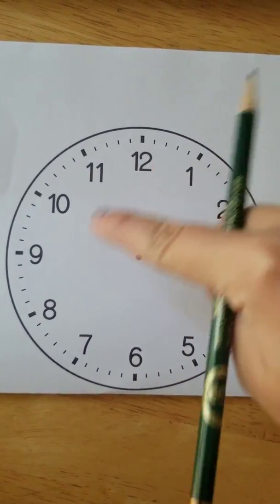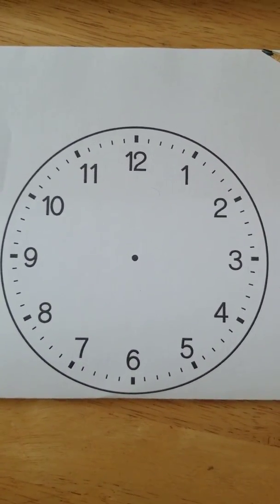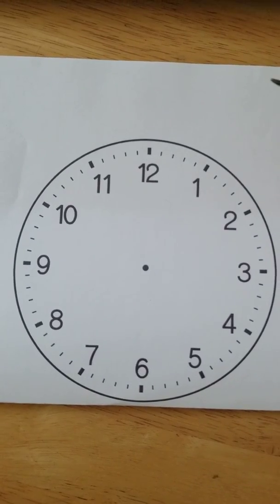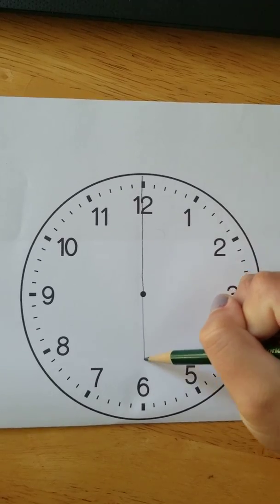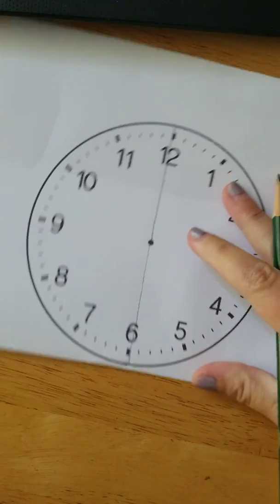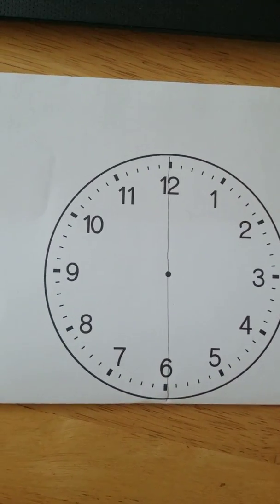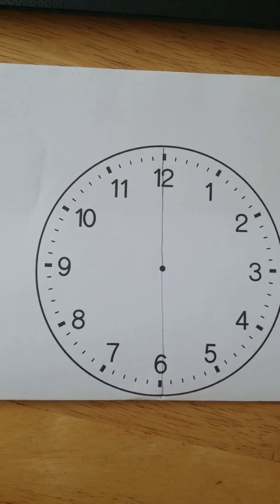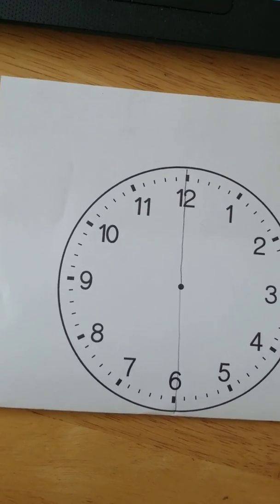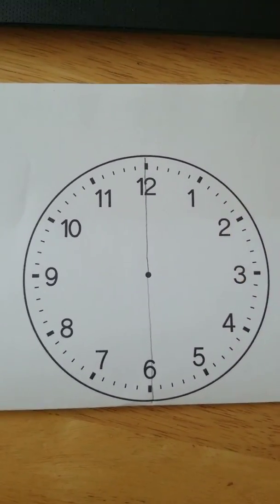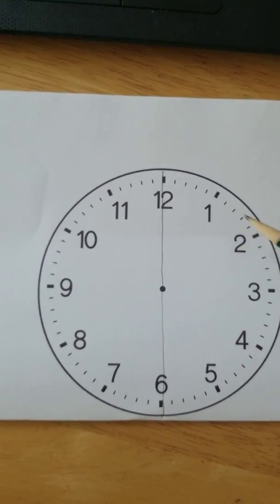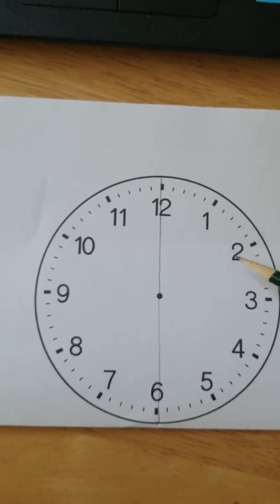So we can actually cut this clock into lots of different pieces. The first way I'm going to cut it is right down the middle, and the reason why I'm cutting it right down the middle is because that's half. That's why we say it's half an hour when there's 30 minutes. I know it's 30 minutes because each of these numbers represents 5 minutes: 5, 10, 15, 20, 25, 30. Here's 30 minutes, it's half an hour, it's half of the clock.